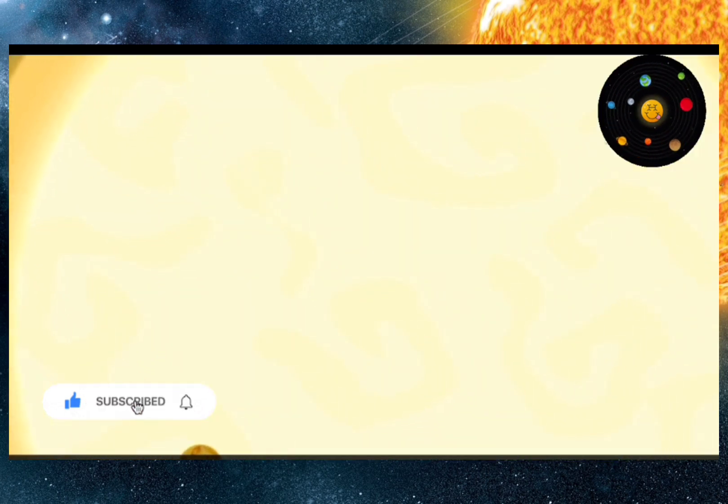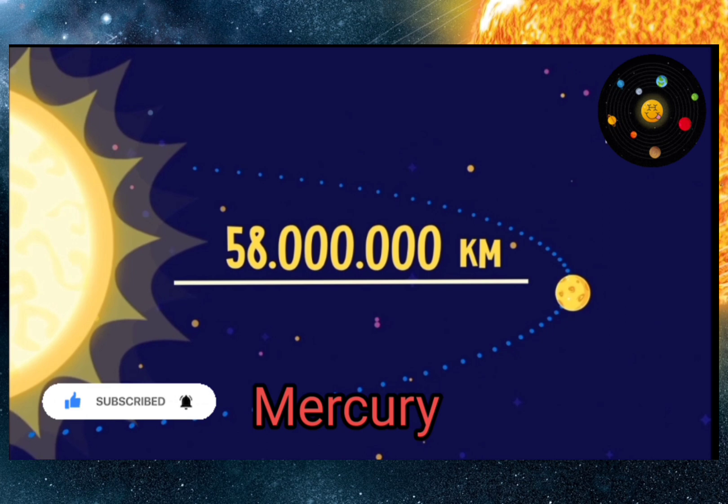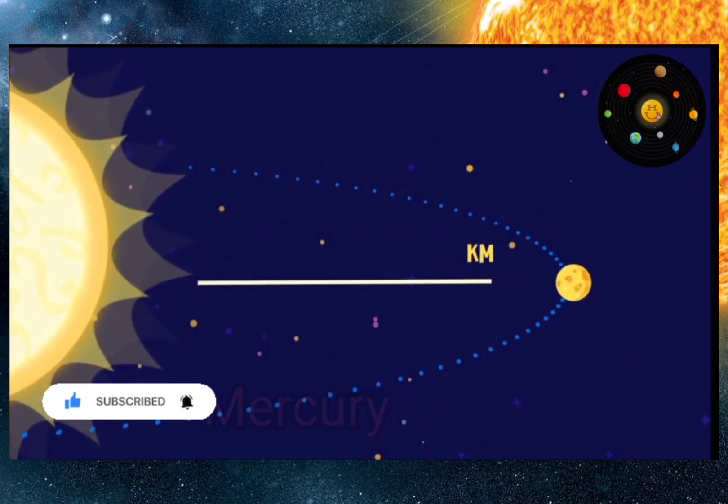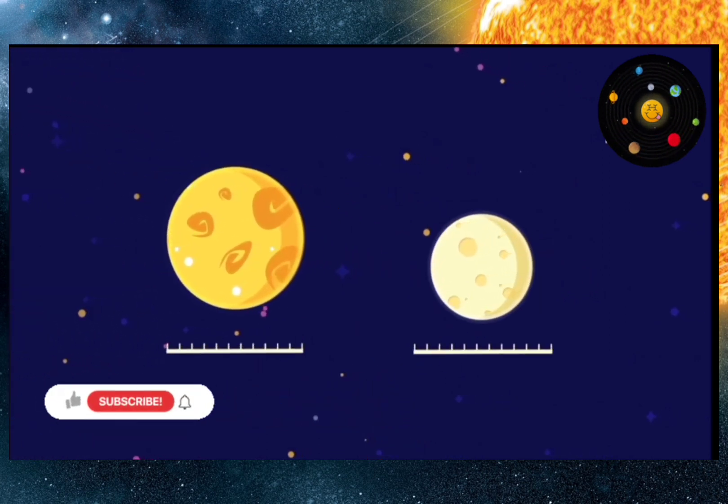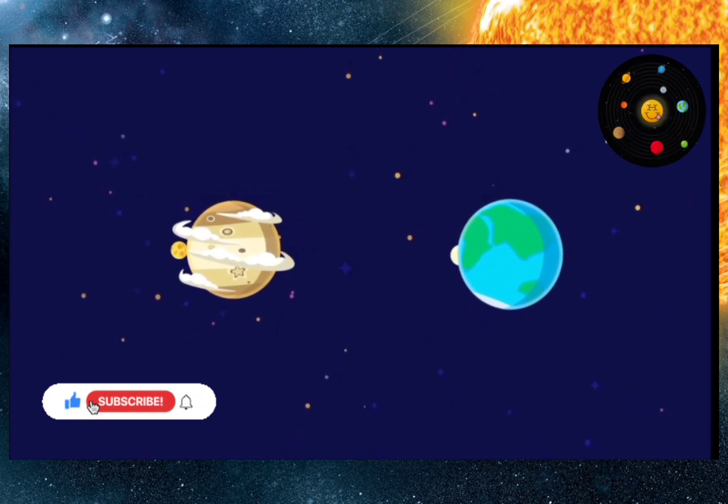This is Mercury, the smallest planet in the solar system and one that is closest to the sun. In size and appearance, it is similar to the moon. Perhaps a long time ago, it used to be a satellite of Venus.